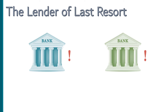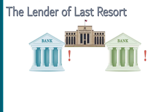When that happens, banks can borrow directly from the Federal Reserve's discount window. It was once a literal window at the Federal Reserve Bank of New York where bankers could come and acquire the loan, but these days it's all done electronically.